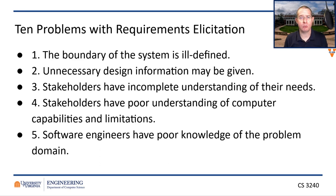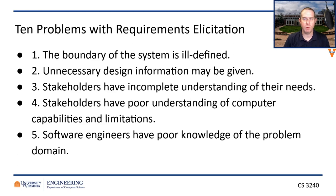What are some problems that can happen during requirements elicitation? Number one: the boundary of the system is ill-defined — do you know when to stop building? Software engineers always think of the next cool feature and have a hard time saying 'this is where we stop and ship.' Making an agreement with stakeholders up front about how far you'll go is very important. Unnecessary design information may also be given — the customer says 'I really want this built with JSON or React' — and that's not really their job.